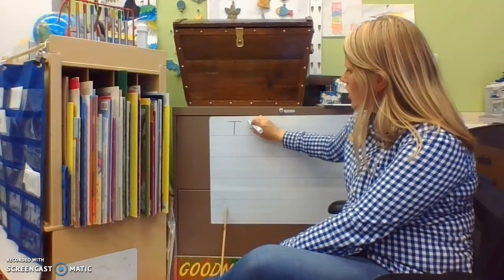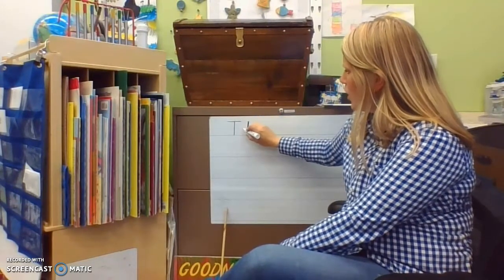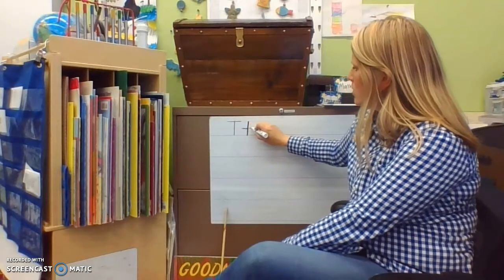For my little t, I start at the top, straight line down, frog jump to the middle, little line across.